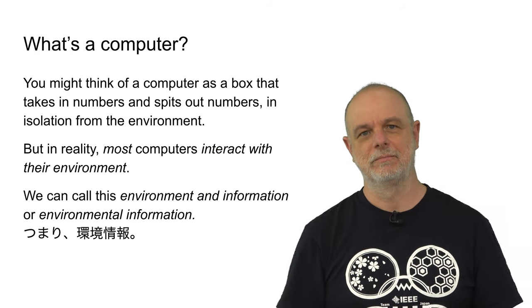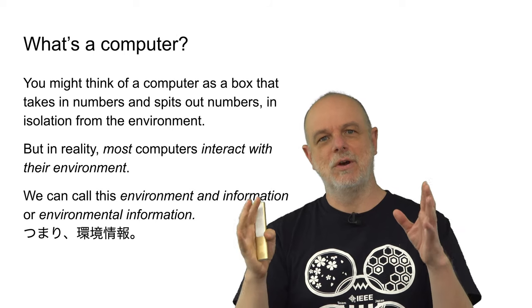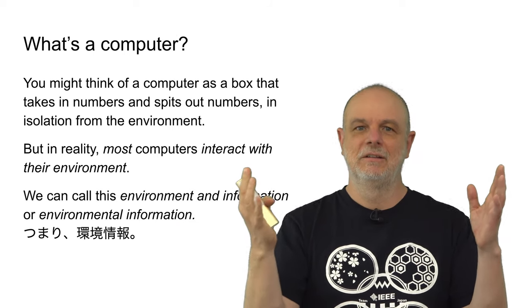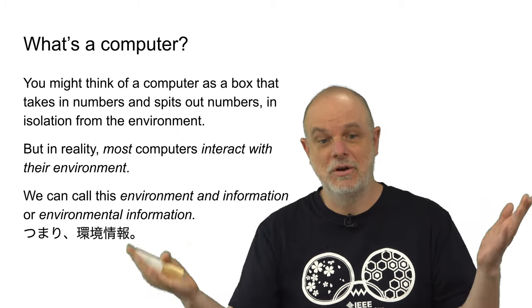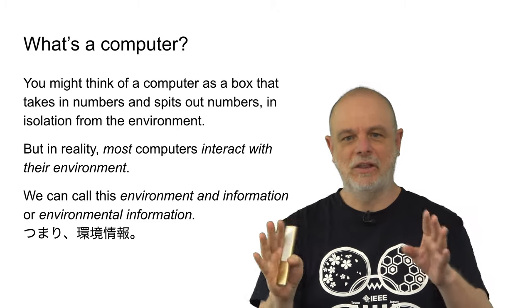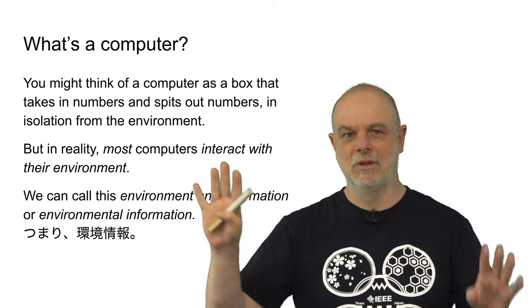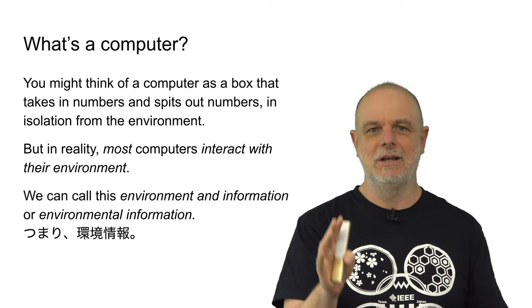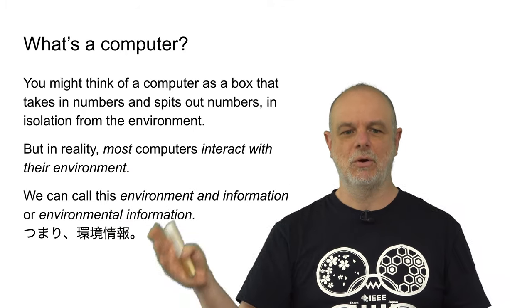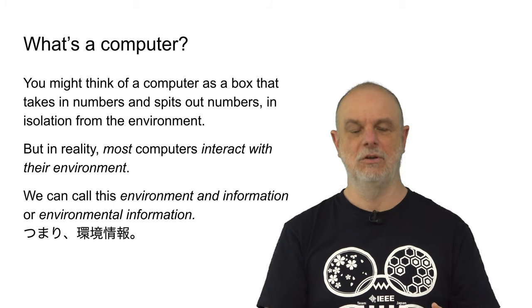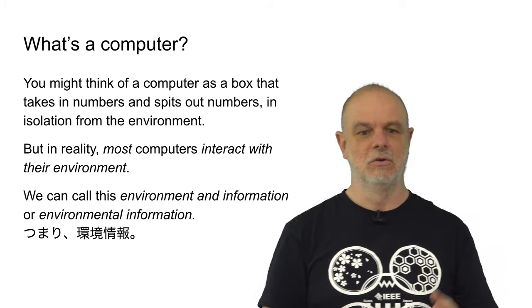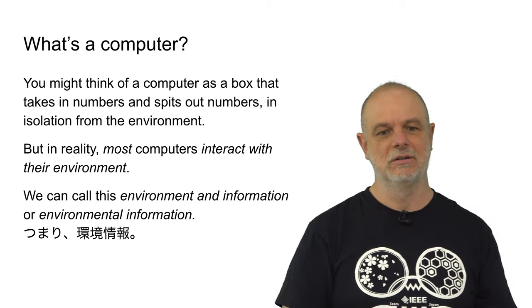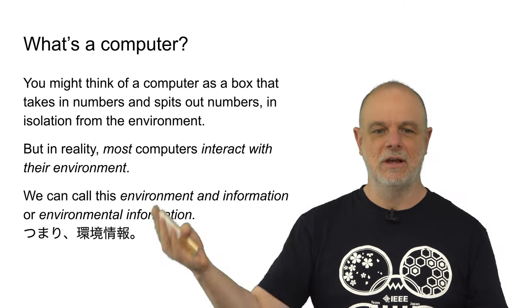So, what's a computer? You might think of a computer as being a box that takes in numbers and puts out some other numbers. It's just this isolated thing that exists away from the environment. But in reality, most of the computers in the world interact with their environment in some way. We can call this environment and information, or environmental information. And in Japanese, we call that Kankyo Joho.